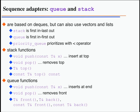For queues and stacks, they don't implement special classes from scratch — queues and stacks are sequence adapters. They use internally a deque or vector for storage and provide an interface that looks like a queue or stack. The stack has push() to put on top, pop() to remove from top, and top() to look at the topmost element. The queue has push() to insert at the end, pop() to remove at the front, and front() and back() to access the first and last elements.